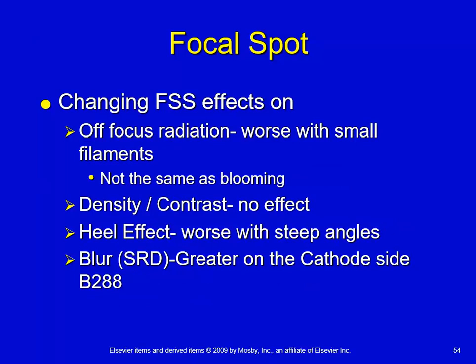Most x-ray tubes are dual focus — a large focal spot and a small focal spot. Changing the focal spot size has an effect on off-focus radiation, which is radiation created outside of the focus, not on the focal track itself. If electrons speed across the tube, slam into the target, and bounce off, they remain negatively charged; the positive anode accelerates them back. If they strike anywhere not on the focal track, that is off-focus radiation. Off-focus radiation increases the effective size of the focal spot and reduces sharpness and recorded detail.